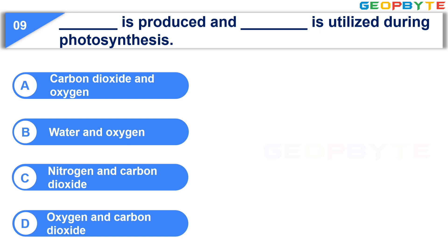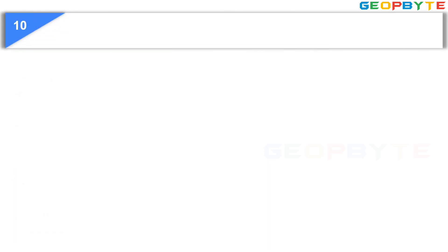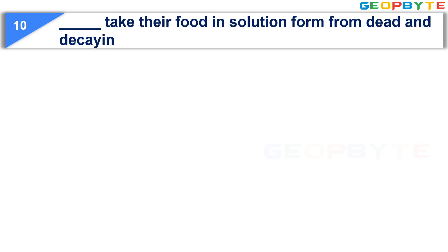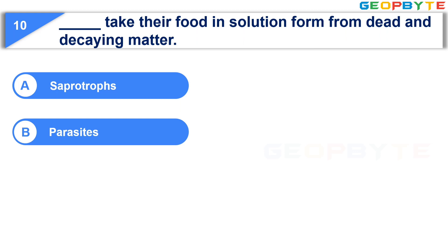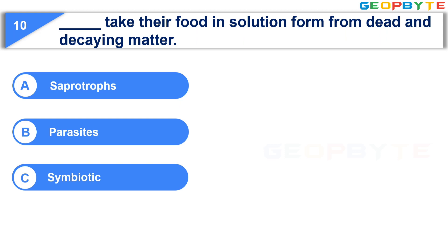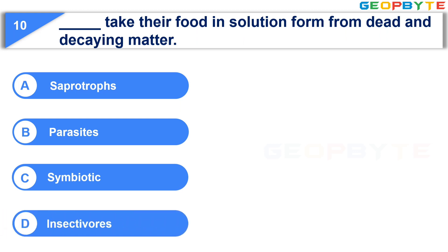Your time is up and the correct answer is Option D, Oxygen and Carbon Dioxide. The tenth question is: Dash take their food in solution form from dead and decaying matter. Option A: Saprotropes. Option B: Parasites. Option C: Symbiotic. Option D: Insectivorous. Your time starts now.